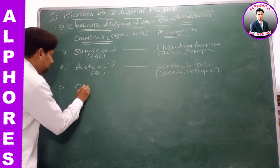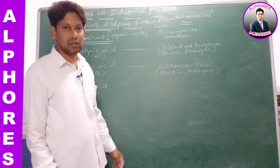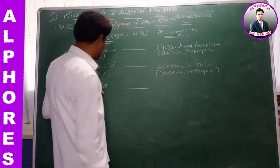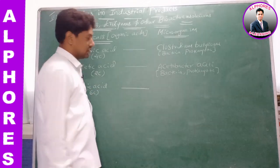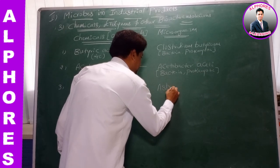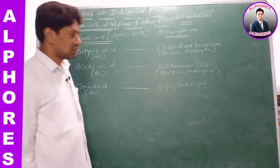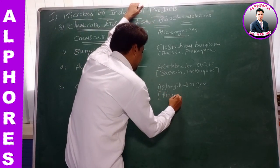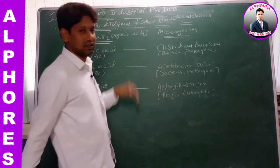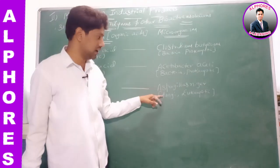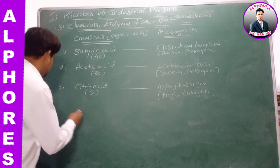Number three is citric acid. Citric acid has six carbons. To produce citric acid industrially in large quantities, the microorganism exploited is Aspergillus niger. Aspergillus niger is a fungi, so it becomes eukaryotic.